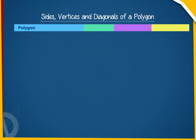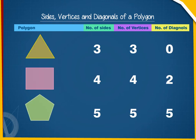Polygon, number of sides, number of vertices, number of diagonals. Triangle: 3, 3, 0.